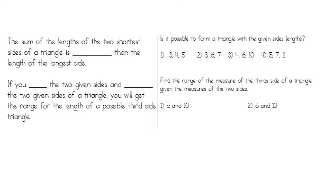The sum of the lengths of the two shorter sides of a triangle is always greater than the length of the longest side. We need those two shorter sides to not only reach from each end of the longest side, but also have enough room to make a peak above it. Now let's look at some examples to see if it's possible to form a triangle with the given side lengths.